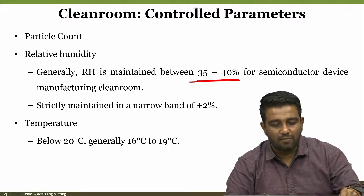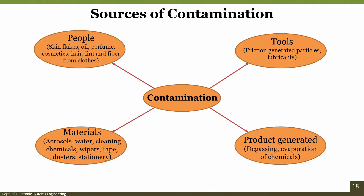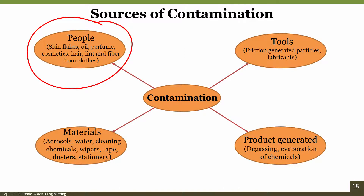There are several sources of contamination, and the biggest is the person working inside the clean room. Contamination comes from materials used inside such as aerosols, water, cleaning chemicals, wipers, tape, dusters, and stationery. It can also come from degassing, evaporation of chemicals at wet benches, and physical vapor deposition like sputtering, e-beam, and thermal evaporation. Tools can generate contamination through friction, lubricants, and particles. People working inside contribute through oil, perfume, cosmetics, hair, lint, and fiber from clothes.